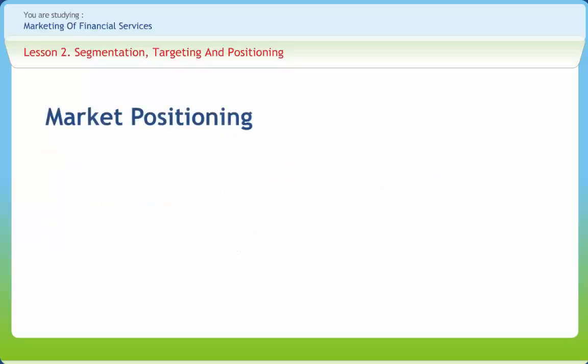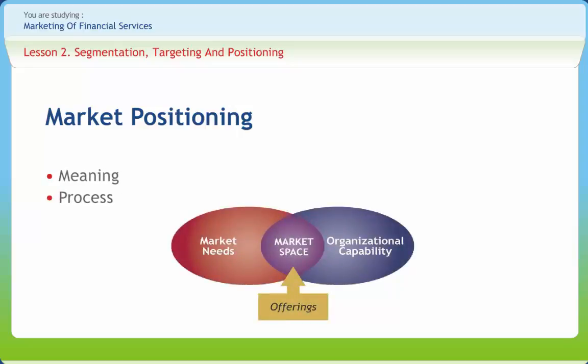The third and final part of the Segment-Target-Position (STP) process is positioning. Positioning is undoubtedly one of the simplest and most useful tools to marketers. After segmenting a market and then targeting a consumer, you would proceed to position a product within the market. Positioning is all about perception. The term positioning refers to the consumer's perception of a product or service in relation to its competitors. You need to ask yourself: what is the position of the product in the mind of the consumer? As perception differs from person to person, so do the results of the positioning map.